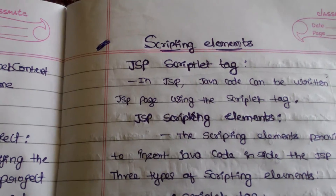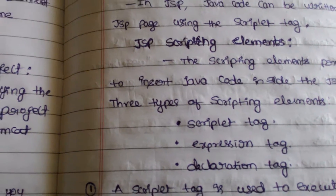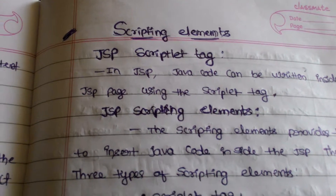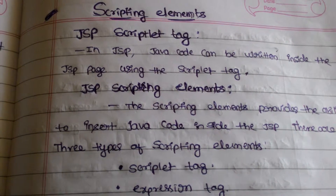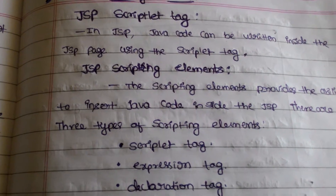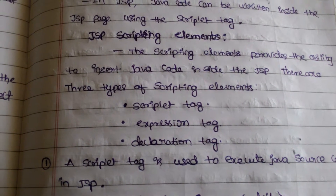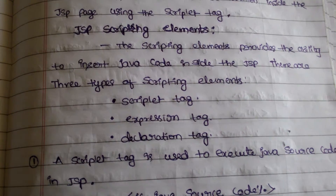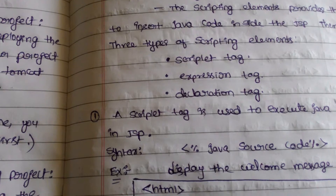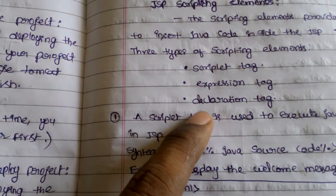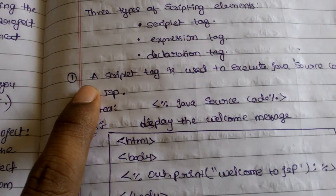In scripting elements we have three tags: scriptlet tag, JSP expression tag, and declaration tag. The scripting elements provide the ability to insert Java code inside the JSP. There are three types: scripting tag, expression tag, and declaration tag. The scripting tag is used to execute Java source code in JSP.